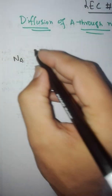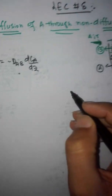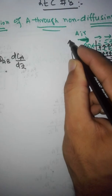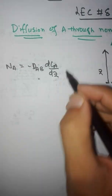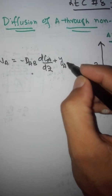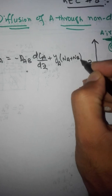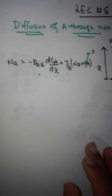We already derived the combined flux equation: NA equals minus DAB times DCA by DZ — this is the Z direction — plus the flux due to molecular diffusion, plus YA (mole fraction of A) times (NA plus NB).